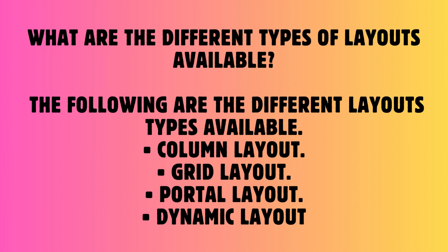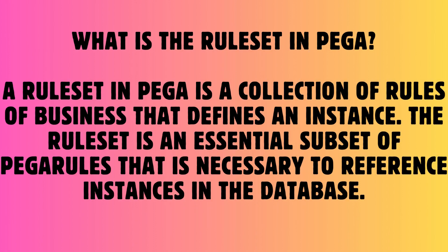Question: What is the rule set in Pega? Answer: A rule set in Pega is a collection of rules of business that defines an instance. The rule set is an essential subset of Pega rules that is necessary to reference instances in the database.